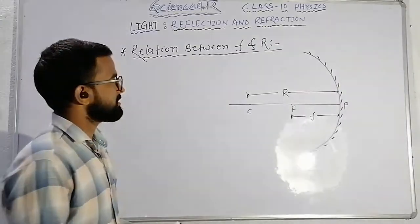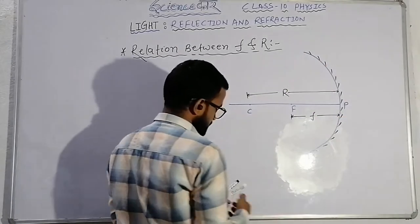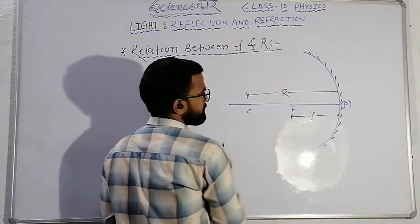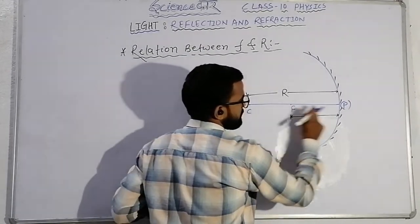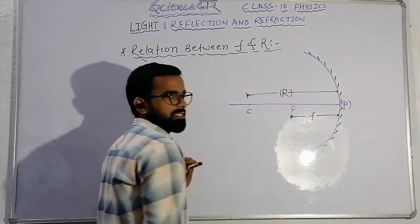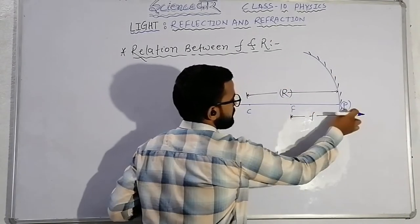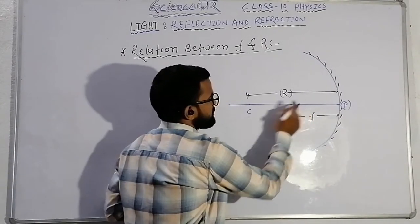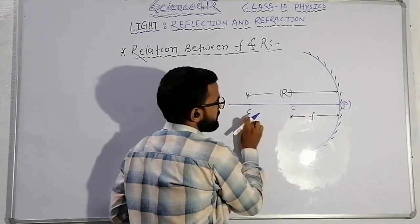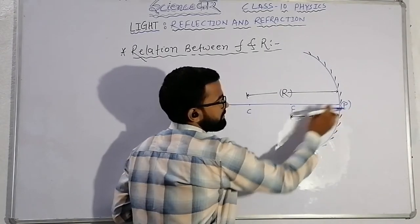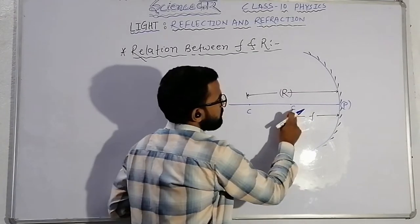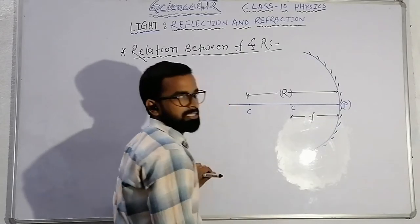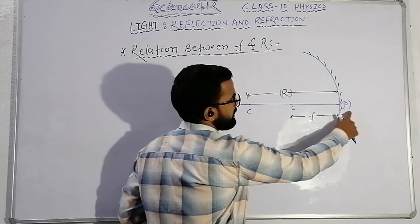Without wasting our time, let's start the topic — the relation between f and r, that is focal length and radius of curvature. You can see that this is a spherical mirror. This is the pole of the mirror and this is the center of curvature. The distance between the center of curvature and the pole is the radius of curvature. The middle point of CP is nothing but the principal focus.